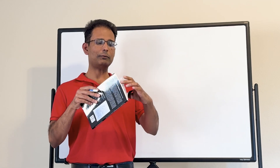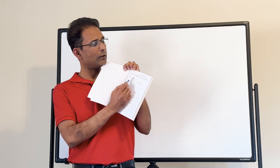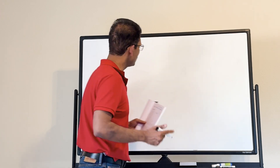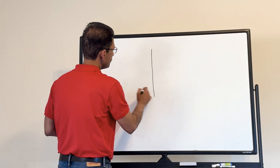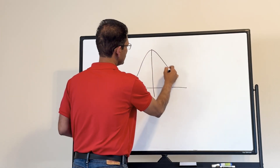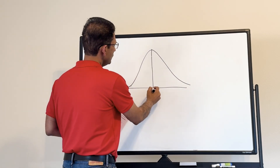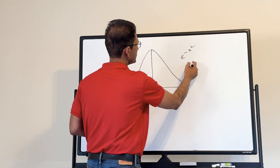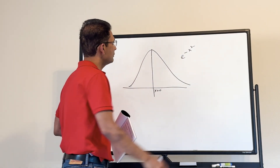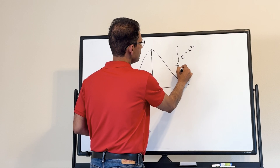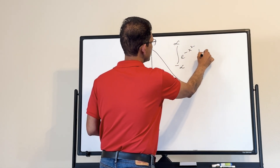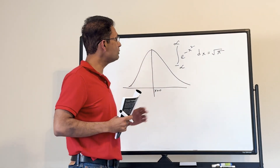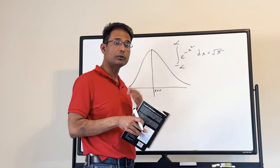The first chapter is on mathematical prerequisites. The first concept is Gaussian integrals. Let me draw the Gaussian function — a bell-shaped curve centered at x equals 0, given by e to the minus x squared. We're going to use this result: the integral from minus infinity to plus infinity of e to the minus x squared dx equals square root of pi.